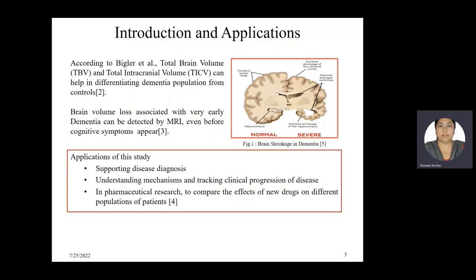According to Bigler, brain volume is the parameter that helps in differentiating a demented subject from a controlled one. According to another study, brain volume loss associated with very early dementia can be detected by MRI even before cognitive symptoms appear. The right hand side picture shows the difference in brain size for normal and severely demented cases — the right segment looks smaller and shows shrinkage of the brain. Applications of this study include supporting disease diagnosis, understanding mechanisms, tracking clinical progression, and pharmaceutical research to compare effects of new drugs on different patient populations.